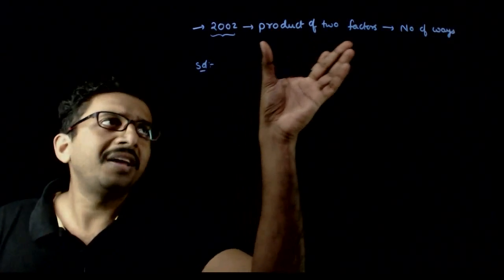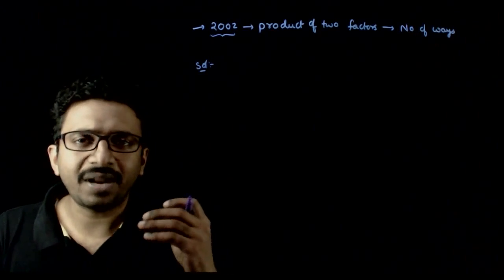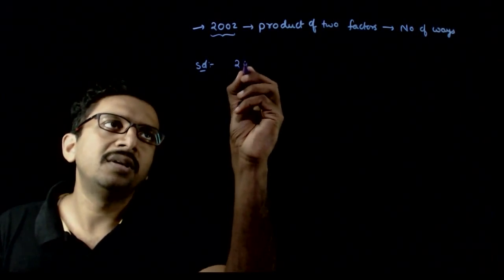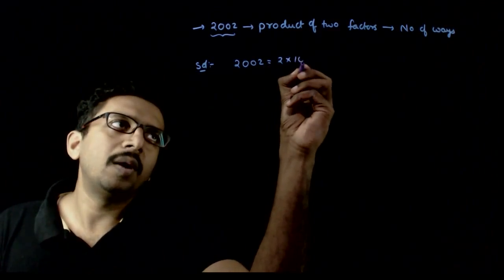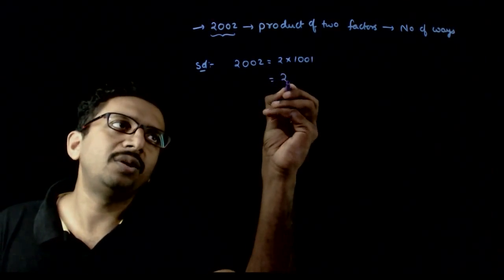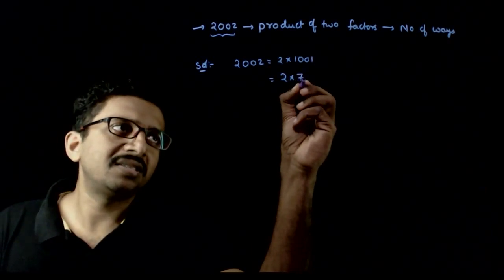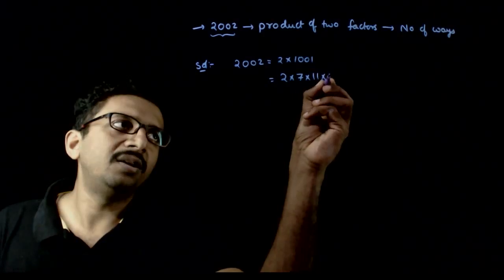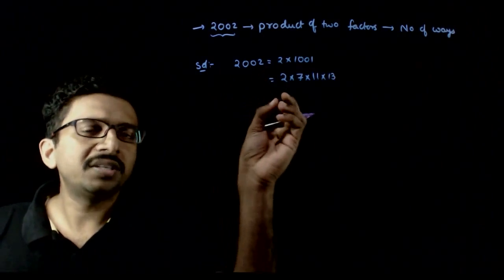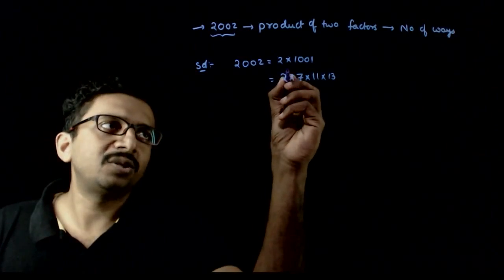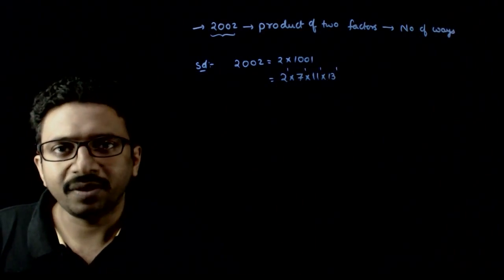If you are talking about factors of 2002, let us first try to see the prime factorization of 2002. So 2002 can be written as 2 into 1001, and 1001's prime factorization is 7 into 11 into 13. So 2002's prime factorization is 2 power 1 into 7 power 1 into 11 power 1 into 13 power 1.